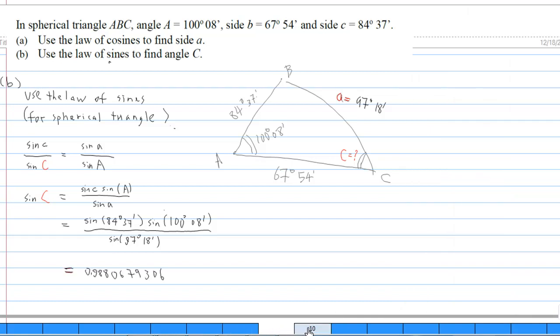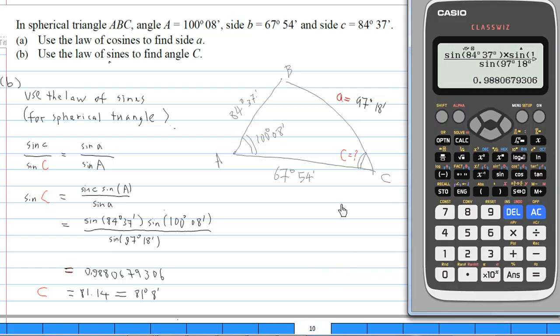From here we can find what is angle C. Using the calculator, we go to sine inverse. That will give me 81.14, which converted into degrees and minutes is equal to 81 degrees 8 minutes. So this is how we find angle C.